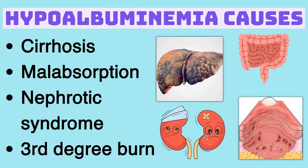Let's brainstorm albumin. Where is it made? Liver. So chronic liver disease gives you low albumin. Can we get rid of it anywhere? Can you poo it out? Sure — that's malabsorption. Can you pee it out? Sure — that's nephrotic syndrome. Can it come off your skin? Sure — third-degree burn, you basically lose plasma. What's another possibility? Decreased protein intake — kwashiorkor. We decreased protein intake, and that will lower albumin level.